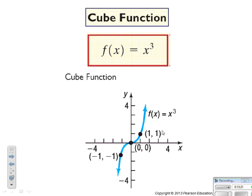The cube function is f of x equals x cubed. Is it even or odd? It is odd — it's a quadrant 1 and quadrant 3 kind of function. For input 1, output is 1; matching input negative 1 gives output negative 1. For input 2, output is 8; negative 2 gives negative 8.